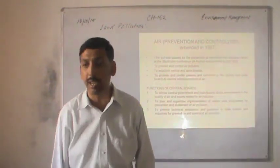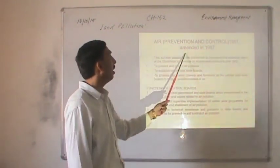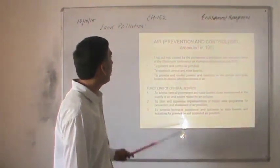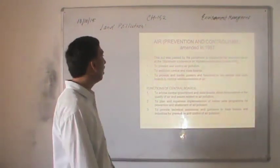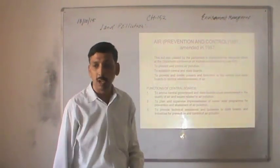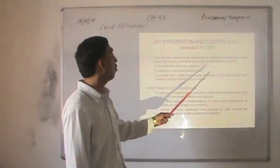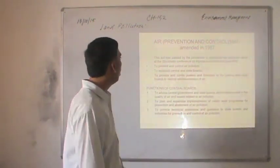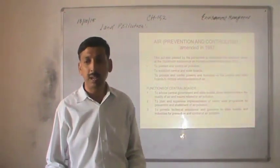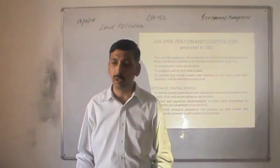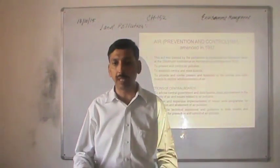The Air Prevention and Control of Pollution Act was passed in 1981 and amended in 1987. This act was passed by the parliament to implement the decisions taken at the Stockholm Conference on Human Environment in June 1972. Its objectives include: to prevent and control air pollution; to establish central and state boards; to provide and confer powers and functions to the central and state boards; and to restore the wholesomeness of air.